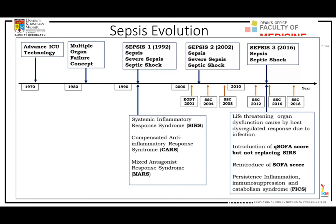In 2016, the current Sepsis-3 definition was established: sepsis is a life-threatening organ dysfunction caused by a host's dysregulated response to infection. The main point here is life-threatening organ dysfunction. However, we need to systematically and objectively assess this organ dysfunction. So we introduced a new scoring tool called qSOFA, and also reintroduced the SOFA score, which was already known since the 1980s.